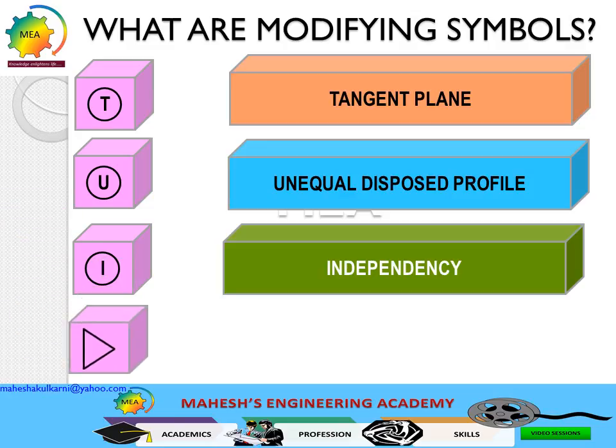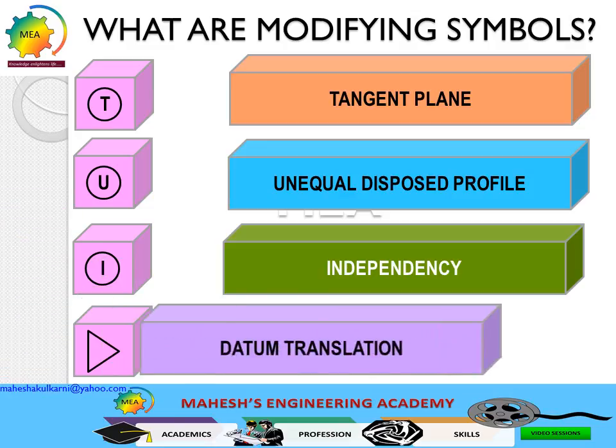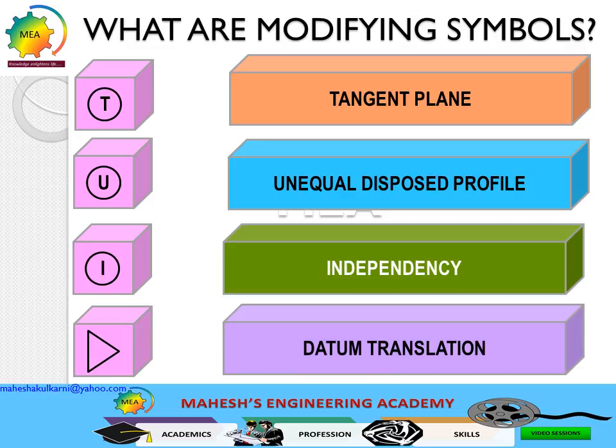The next symbol is translation. That means the datums are not fixed at basic dimensions — they are allowed to move. The tangent plane and unequal symbols are used along with the feature control frame.